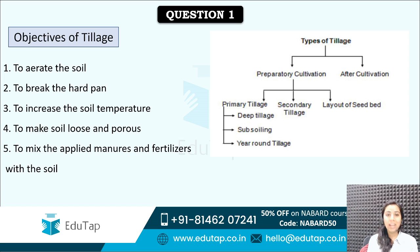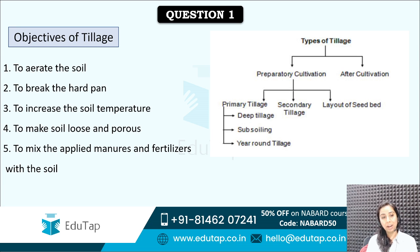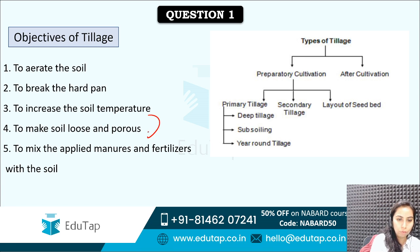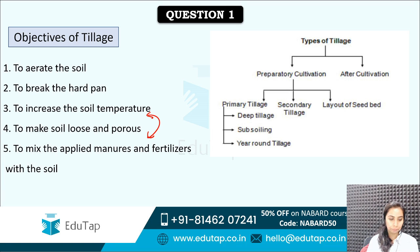You have to apply your knowledge. That is what the examiner is expecting out of you. So the objectives of tillage are to aerate the soil, to break the hard pan, to increase the soil temperature — that is an indirect objective — and to make soil loose and porous. So options 3 and 4 are related to each other. To mix the applied manures and fertilizers with the soil is also an objective.